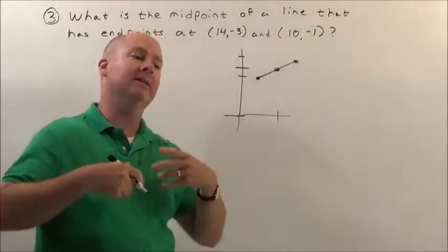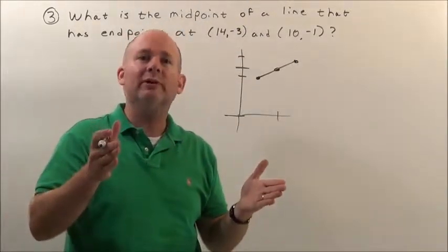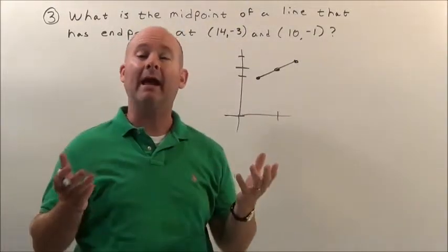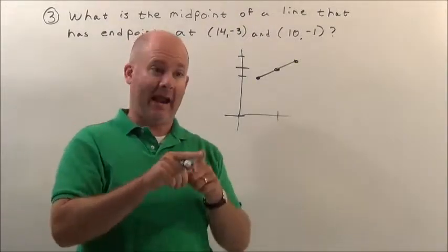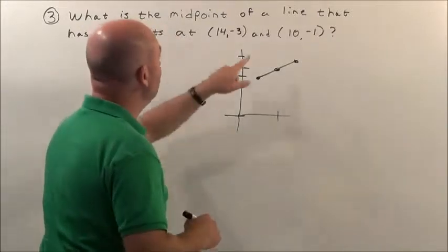Midpoint is just like if I want to find the middle of two people's ages. If this person's 10 and this person's 20, the middle of their ages is 15. How do you get that? You basically add their two ages together, divide by two. That's what we're going to do here.